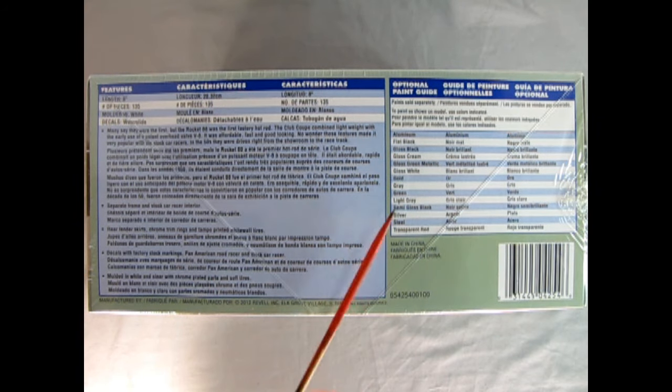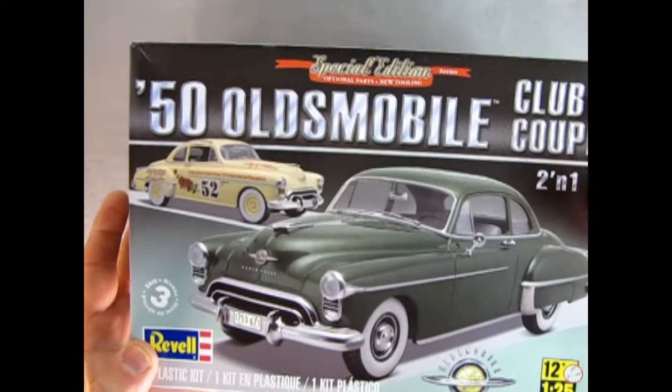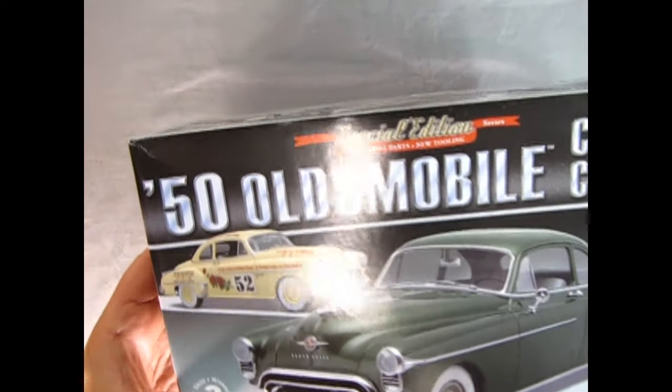Decals with factory stock markings, Pan American Road Racer and Stock Car Racer, molded in white and clear with chrome plated parts and soft tires. And here we also have all the paint color callouts. Now let's take the lid off our 50 Oldsmobile Club Coupe and see what's in the box.